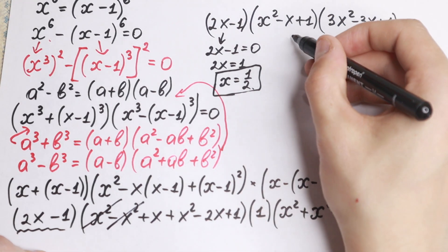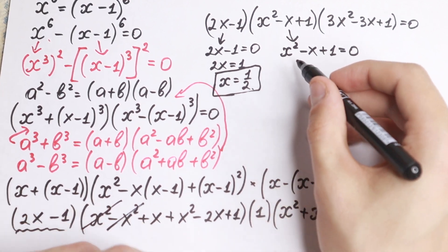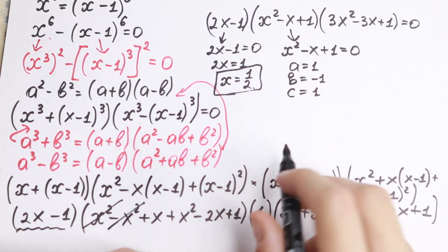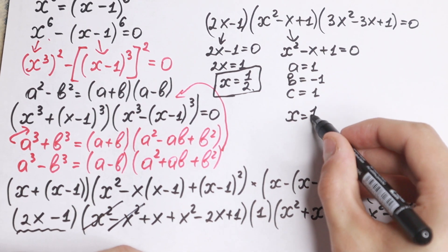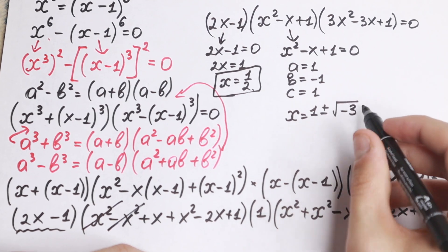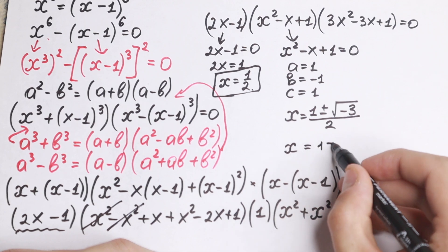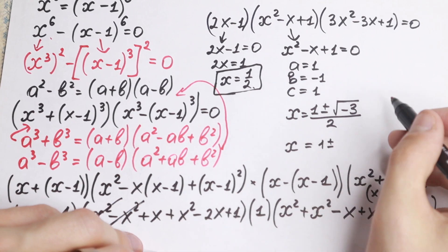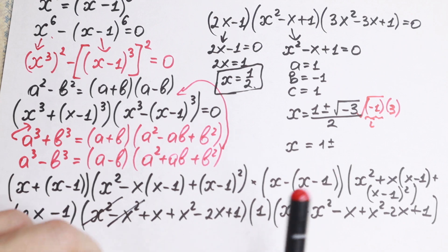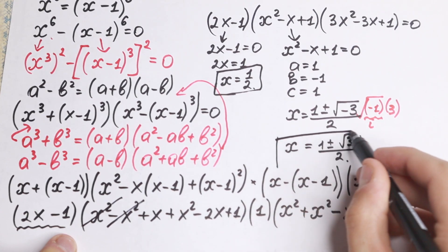But we need to find more roots since we have a 6th power equation. From x squared minus x plus 1 equals zero, using the quadratic formula with a equals 1, b equals minus 1, c equals 1, the discriminant is 1 minus 4 equals minus 3, giving complex roots. We write x equals 1 plus or minus i times the square root of 3, all over 2.